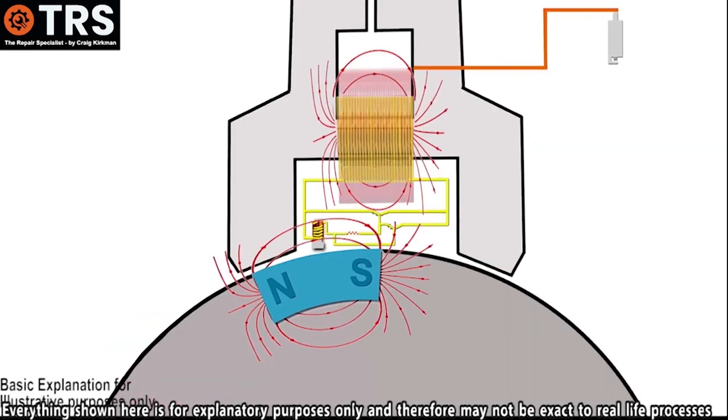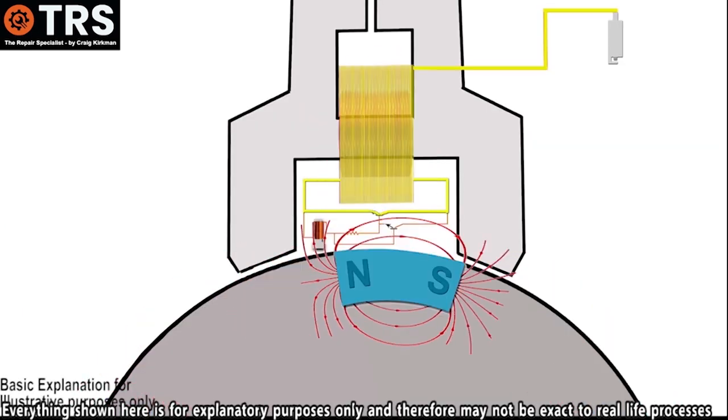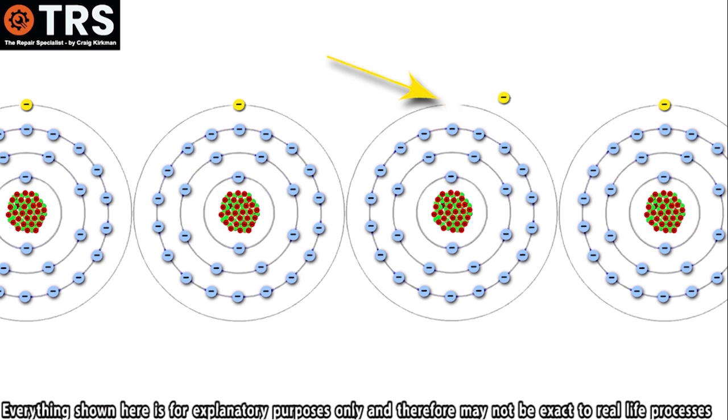Now, of course, the magnet moving past the wire wouldn't just move the electron from one atom, it would move the electrons from billions. I'm just making this simple example. So to get things going, let's imagine that this electron has received enough stimulus or enough power of strength to move it out of the orbit of its atom and towards the next atom.